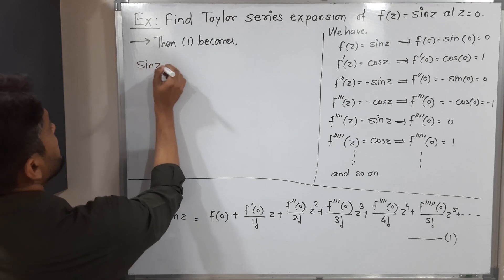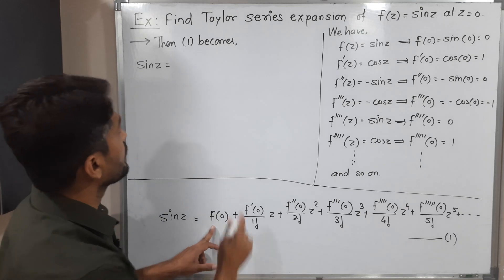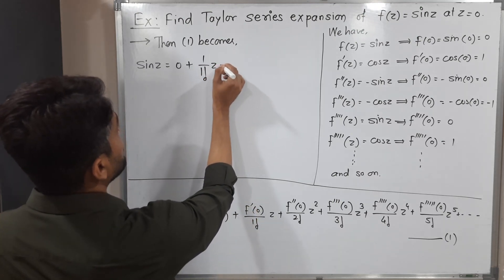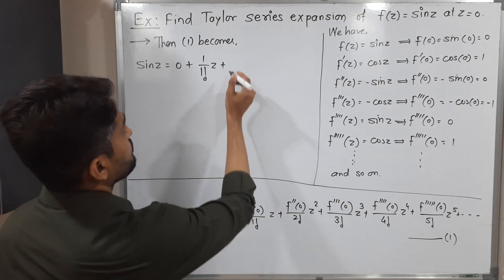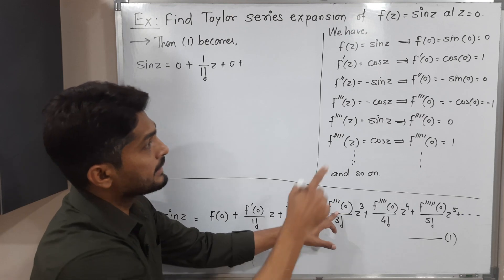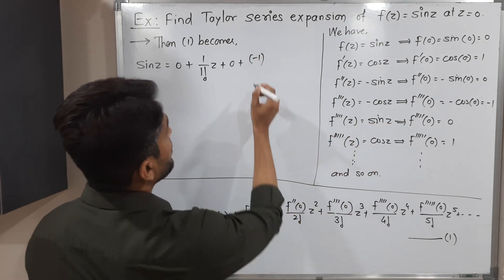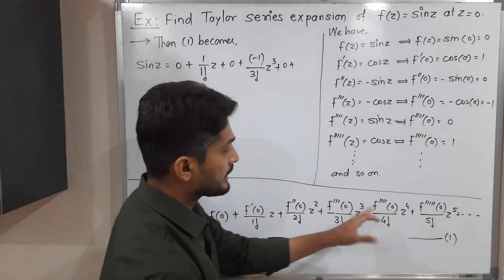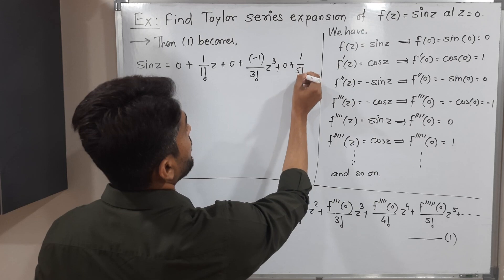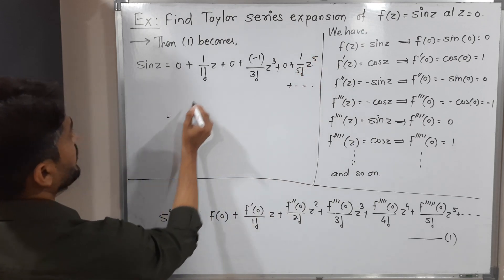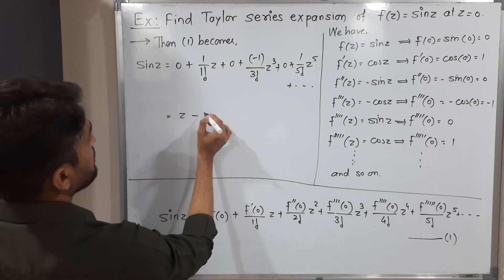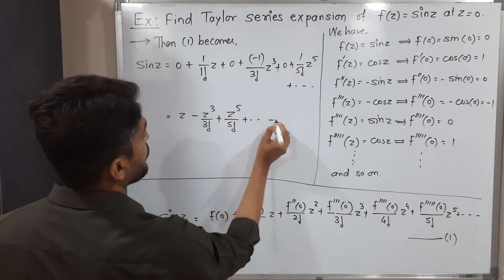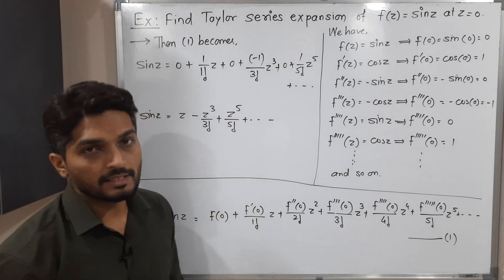Now putting all those values into equation number 1: sin(z) equals 0 plus 1 upon 1 factorial times z, plus 0, minus 1 upon 3 factorial times z cubed, plus 0, plus 1 upon 5 factorial times z to the 5, and so on. Writing it properly: sin(z) equals z minus z cubed upon 3 factorial plus z to the 5 upon 5 factorial and so on. This is the required Taylor series expansion of sin(z) at z equal to 0.